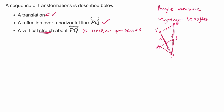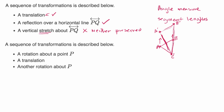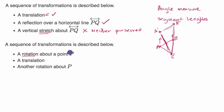Let's do another example. A sequence of transformations is described below — they give three transformations. Pause this video and think about whether angle measures, segment lengths, both, or neither will be preserved. The first transformation is a rotation about a point P. That's a rigid transformation, and it would preserve both segment lengths and angle measures.